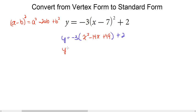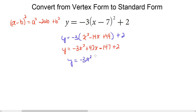Now distribute the negative 3: negative 3 times x squared is negative 3x squared; negative 3 times negative 14x is positive 42x; and negative 3 times positive 49 is negative 147. Bring down the plus 2. Combine like terms: negative 147 plus 2 is negative 145. Our quadratic function is now in standard form: y equals negative 3x squared plus 42x minus 145.